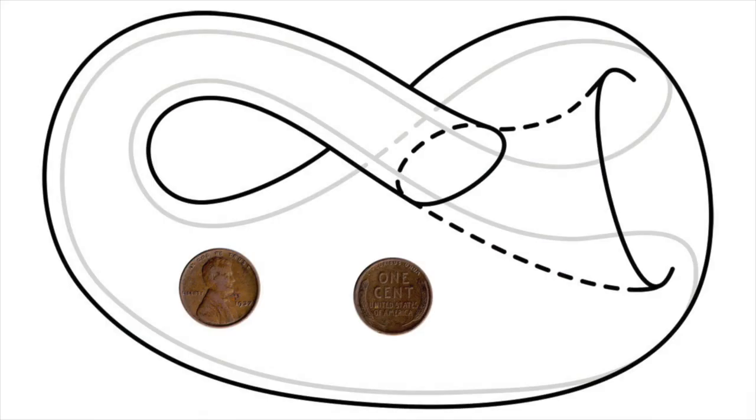Take a coin, slide it across the surface of a Klein bottle until it returns to its starting point, and the coin, as if by magic, will be flipped over. This is because, unlike a sphere or a regular bottle, a Klein bottle is non-orientable.